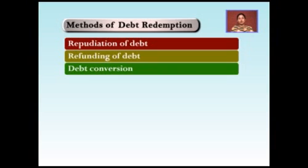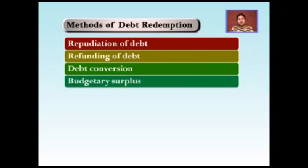The next method is the budgetary surplus, used by the government for paying off public debt. In this case, the government is required to purchase its own bonds and securities from the market. However, this is a rare phenomenon and is rarely adopted by governments in various economies.